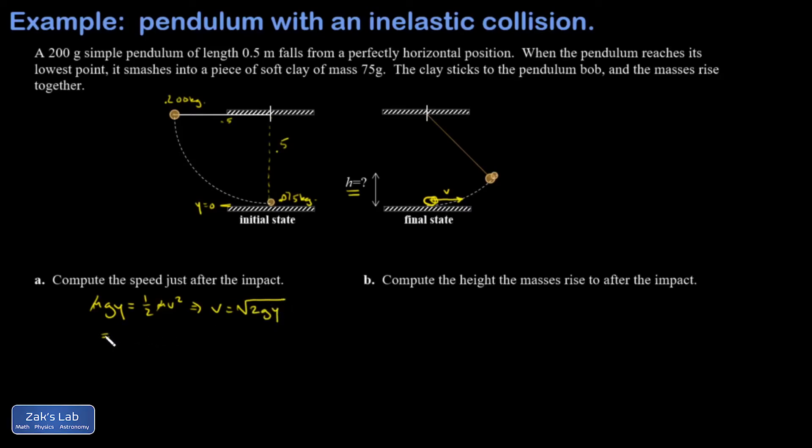So I'm going to plug some numbers into this. And I get 2 times 9.8 times 0.5 square rooted. And my speed comes out to 3.13 meters per second before the impact occurs. Now I have an inelastic collision, and I need to get this final speed here to answer question A.